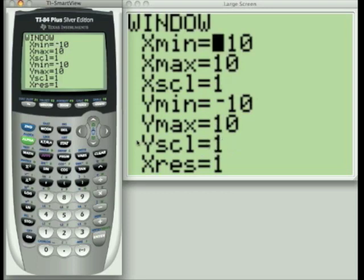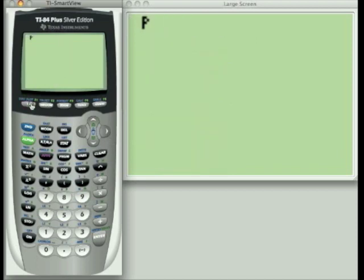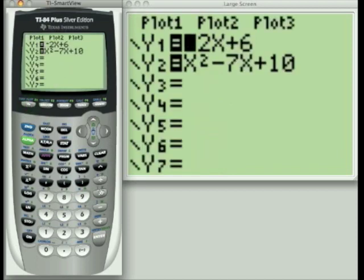Before we do anything else, and before I start changing any of these settings, I'm going to go back to my y-editor screen. And I'm going to turn off my graphs by going over to the equal sign, and un-highlighting them. And I'm just going to arrow off to make sure they're both turned off, and they both are turned off right now.